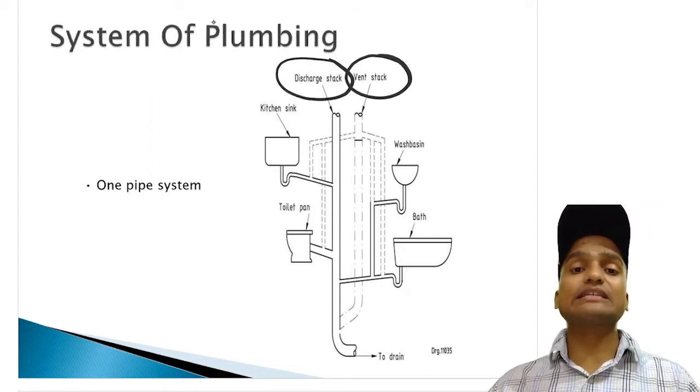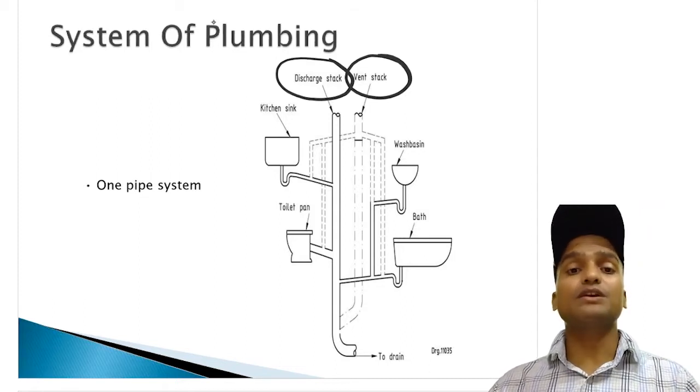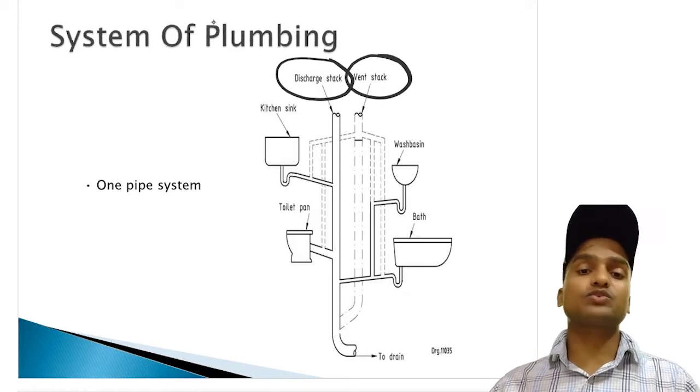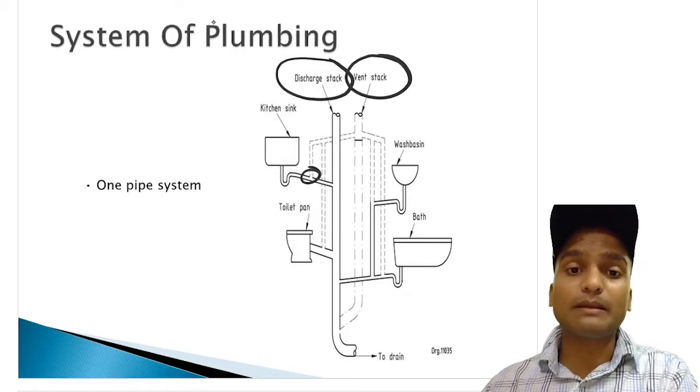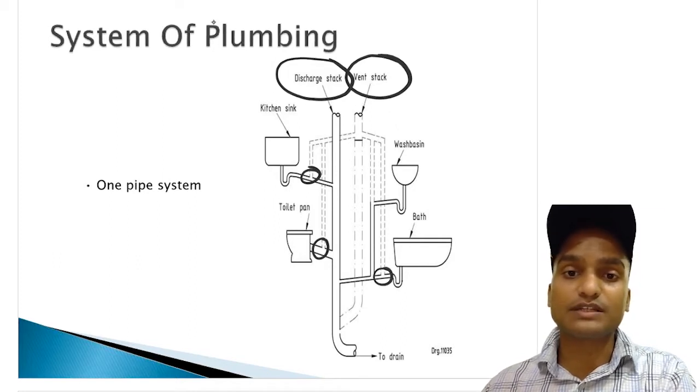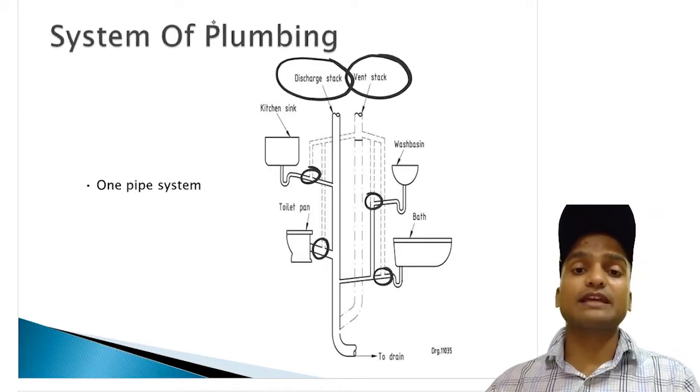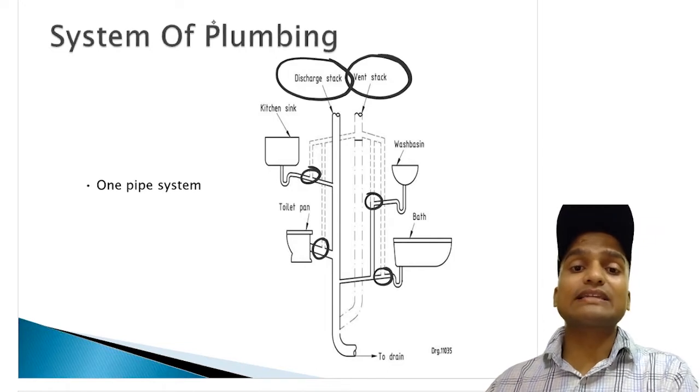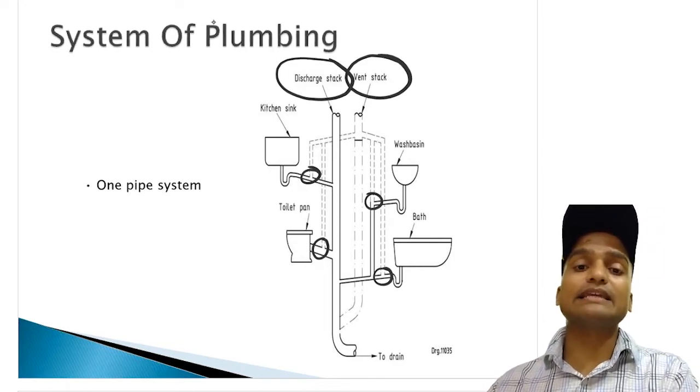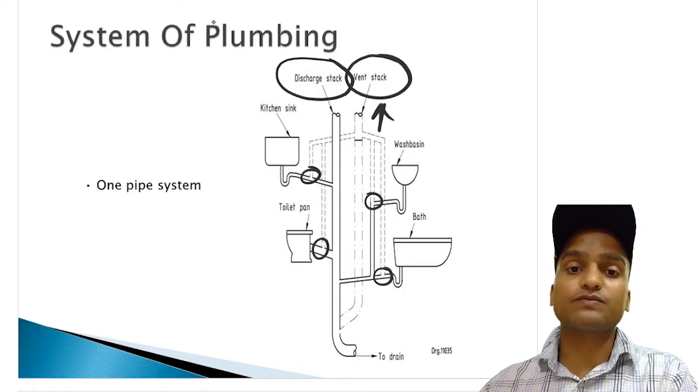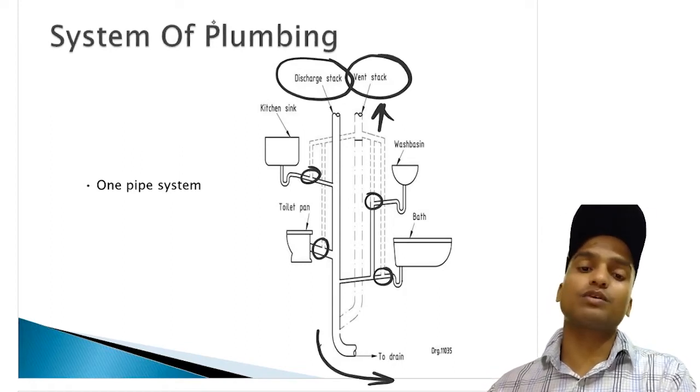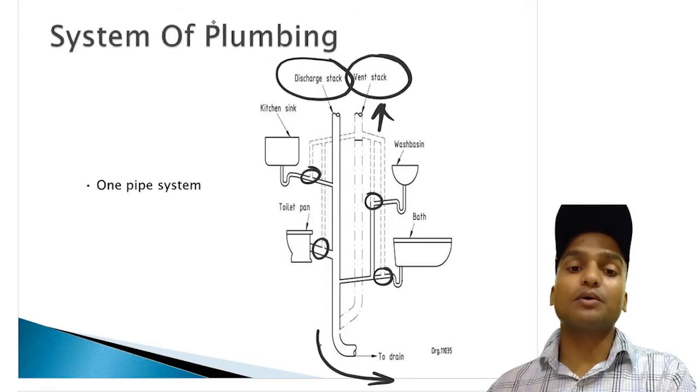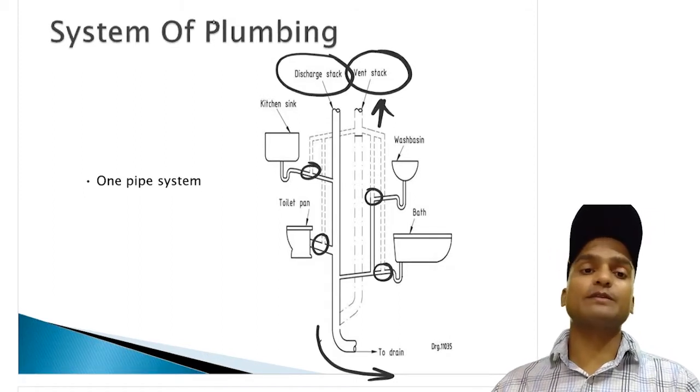The discharge stack is receiving discharges from the waste water as well as the soil water. And this vent stack is connected with all the plumbing fixtures. If you look at these joints and through all these traps and fittings, the vent stack is receiving foul gases and is releasing to the atmosphere. And through the discharge stack, the waste water and the soil water is sent to the drain or the sewer. This was one pipe system.